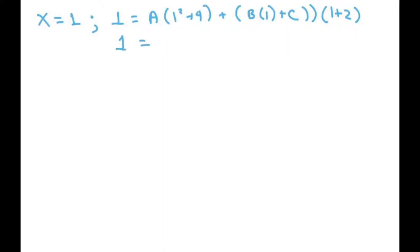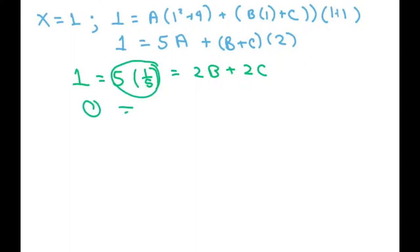Well this is going to give you 1 equals 5A. We already know that A is 1/5, and then we get B + C times 2. So we're going to get 1 equals 5(1/5), which is 1 equals 2B + 2C. If you subtract 1 from both sides, you get 0 equals 2B + 2C. You could divide everything by 2 and get 0 equals B + C.